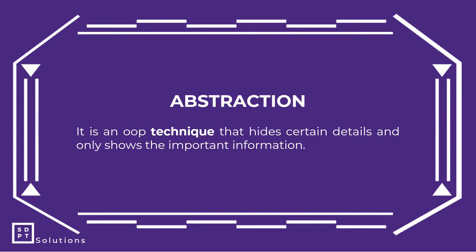So ano nga ba talaga ang abstraction? Sabi dito sa ating description, isa siyang OOP technique that hides certain details and only shows the important information. From the word itself — abstract — yung mga bagay na abstract ideas ay madadalas na mga general. So for example, sabihin na natin 'animal.' General idea yun. Abstract idea ang animal. Pero meron pa tayong mas specific sa animal — anong animal? Is it a pig? Is it a dog? Is it a cat? Yun yung tinatawag nating abstract idea. Parang general, abstract, hindi pa siya clear.